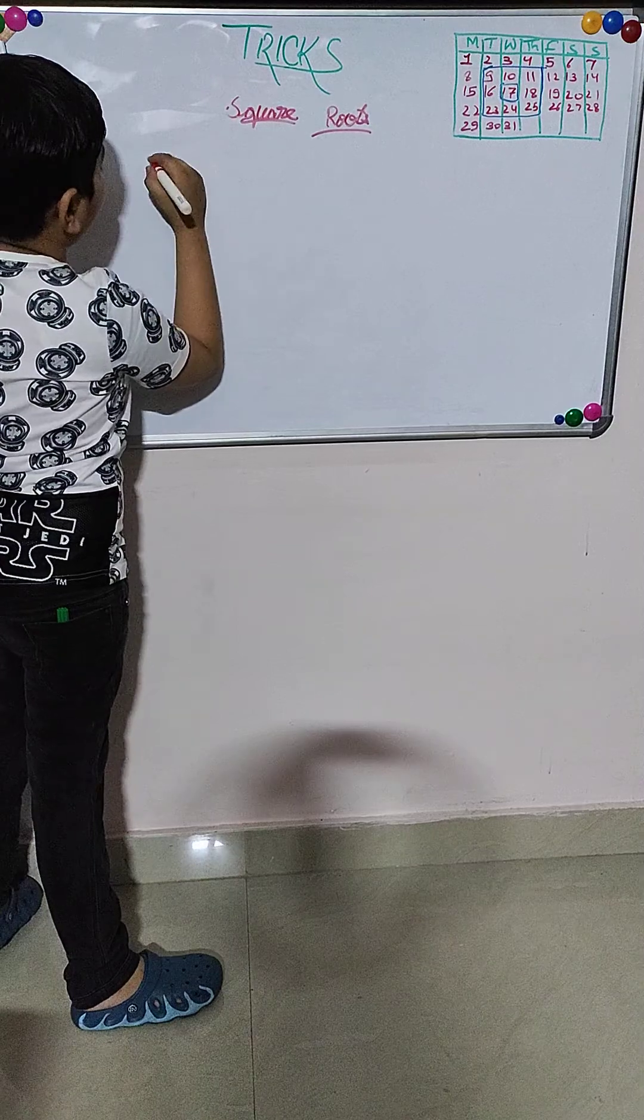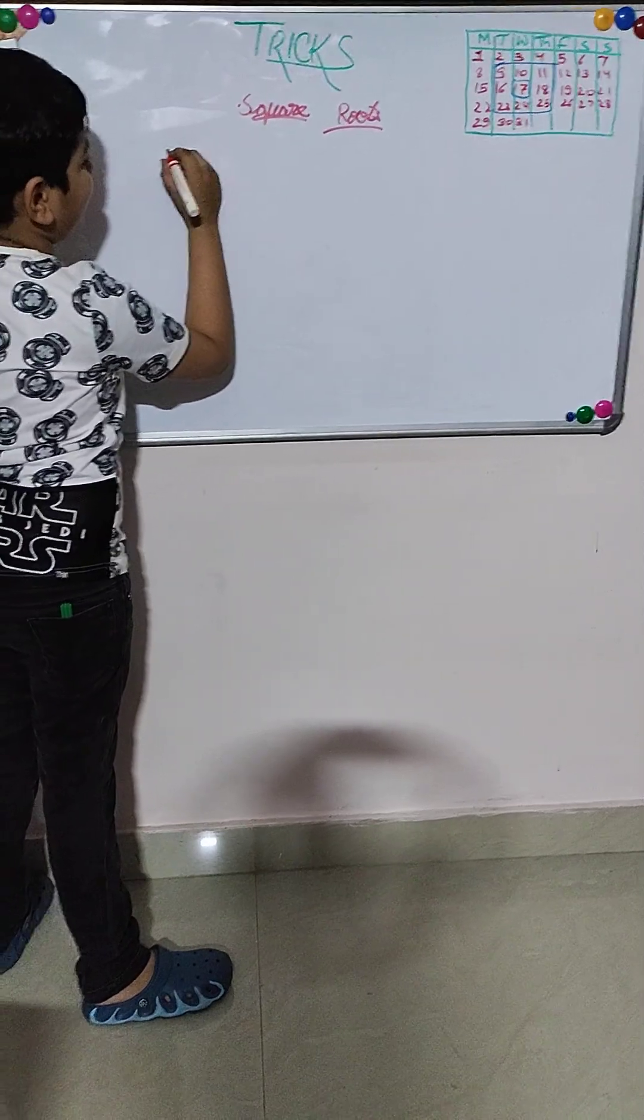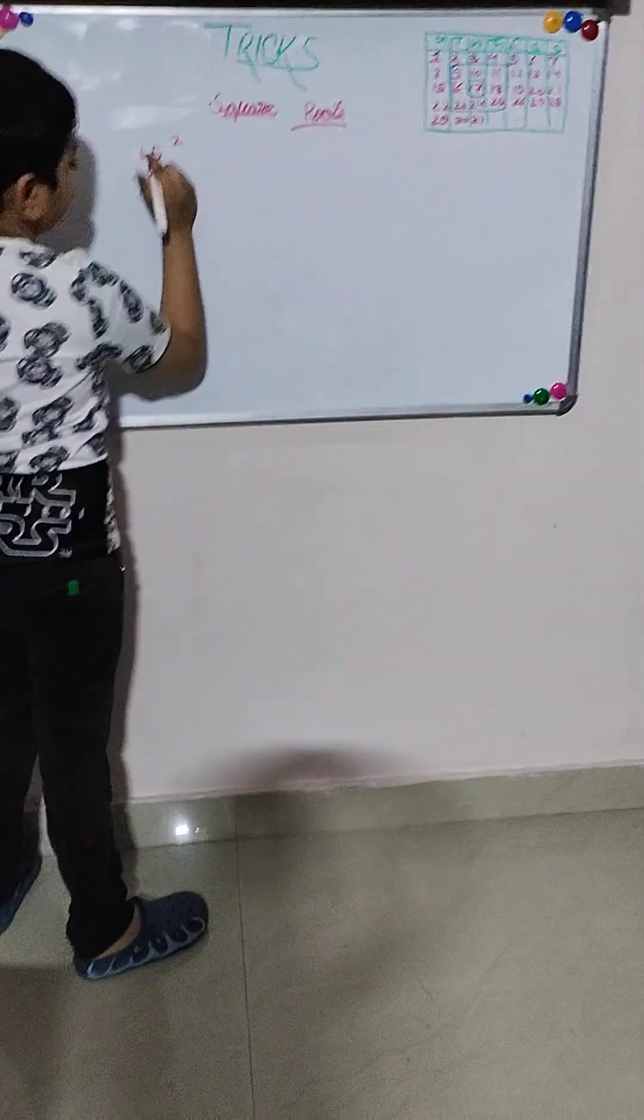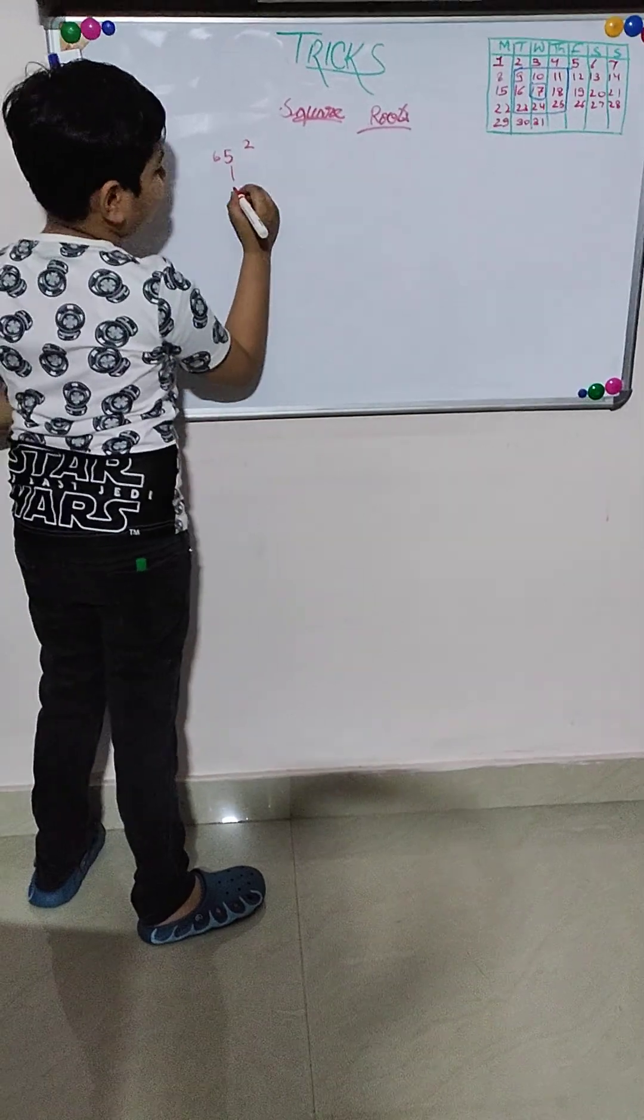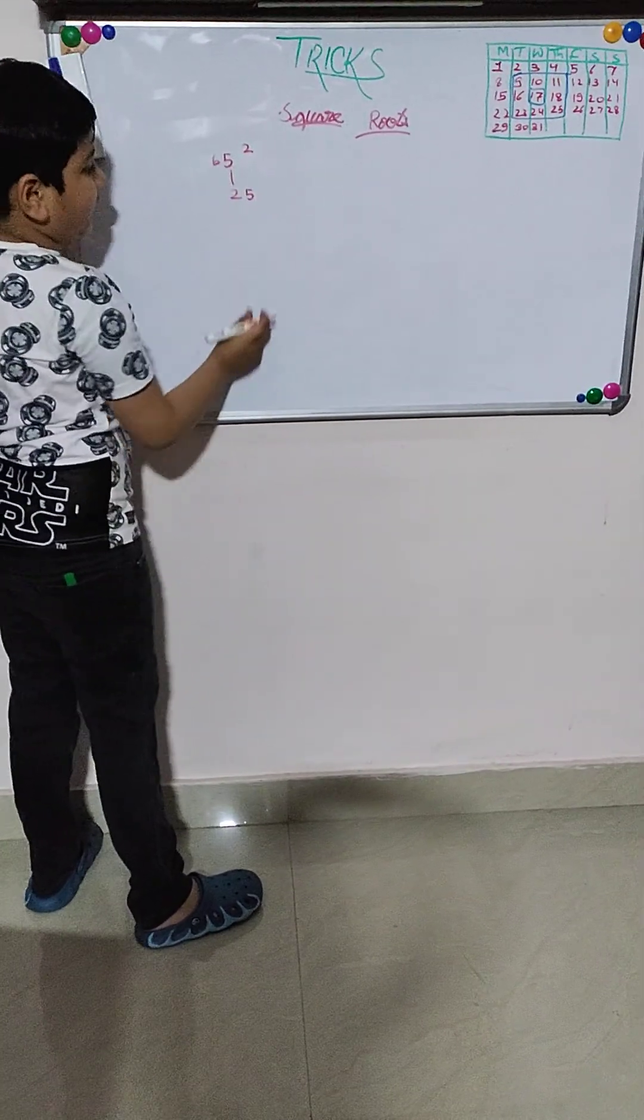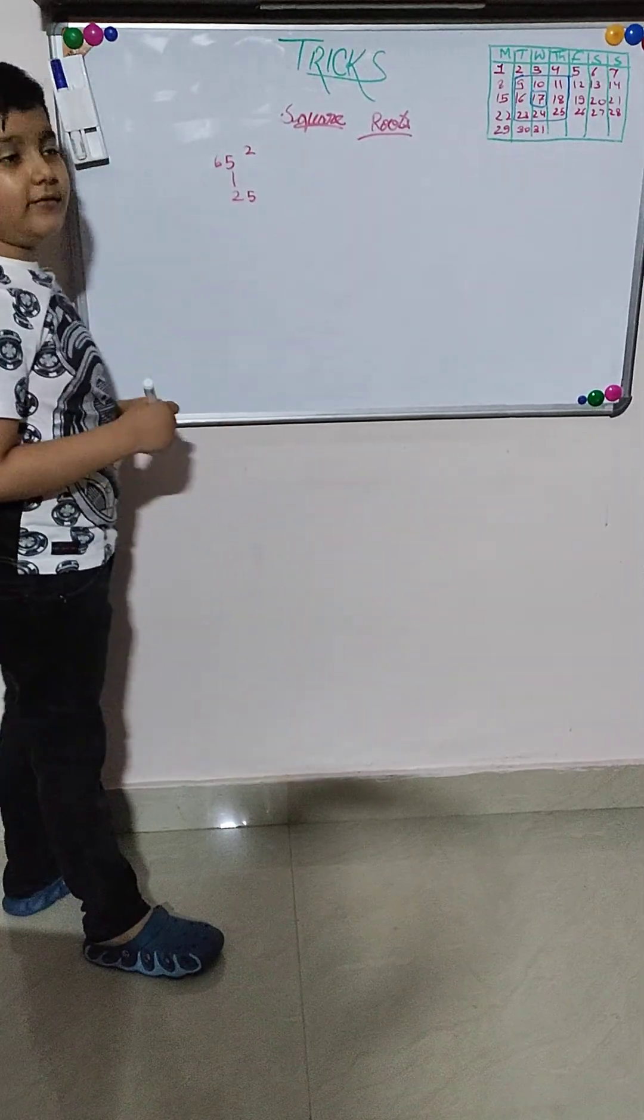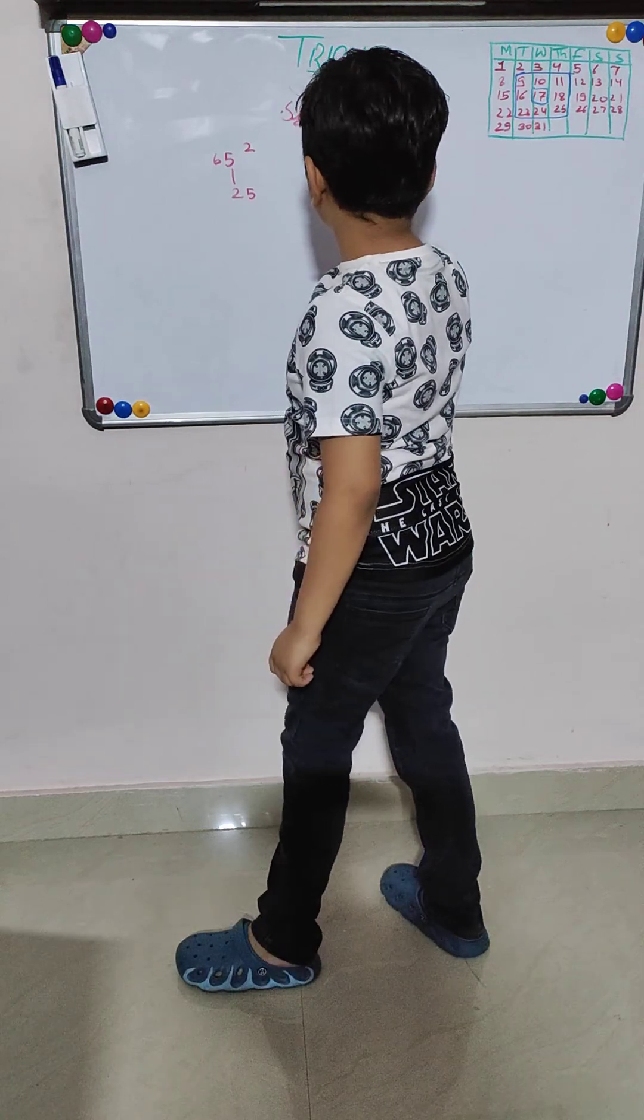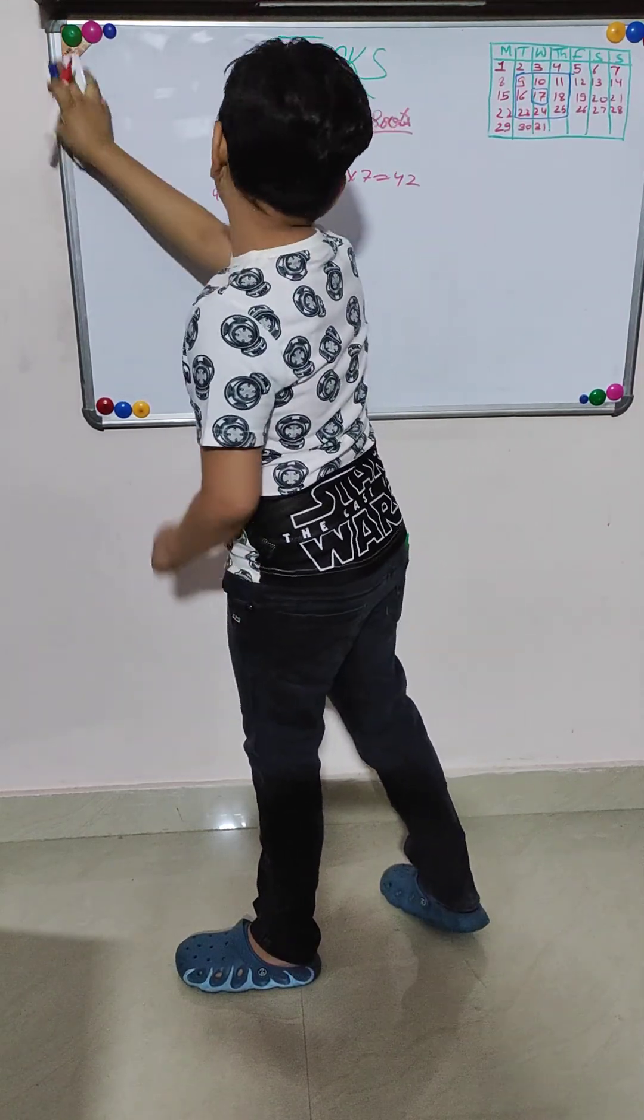Let's see how to do it. So my number is 65 squared. First we will do the square of 5. The square of 5 is 25. And we will multiply 6 into the next number, means 6 into 7. 6 into 7 is 42.